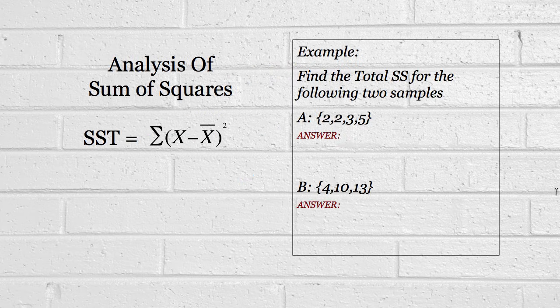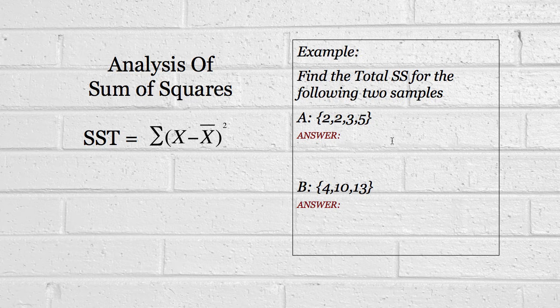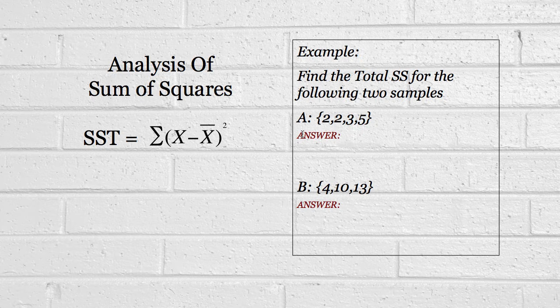As an exercise, I'm going to get you to try and find the total sum of squares for the following two samples. Here's A and B. What I want you to do is try to use this formula here and find that figure, the SST, for both of these two samples. It's really quite crucial to get your head around what SST represents.